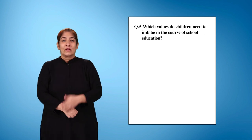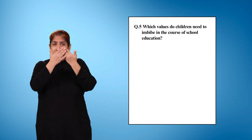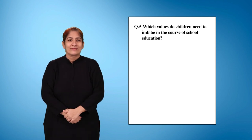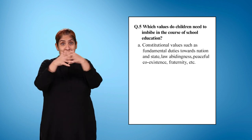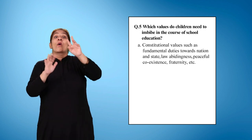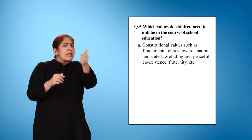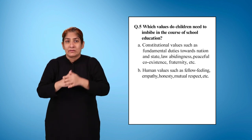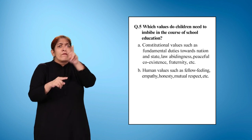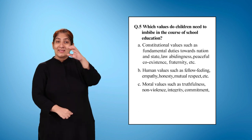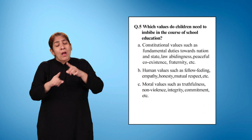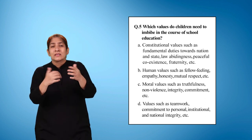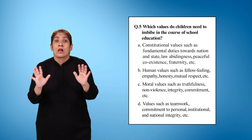Question 5: Which values do children need to imbibe in the course of school education? Select one or more options. Option A: Constitutional values such as fundamental duties towards nation and state — law-abidingness, peaceful coexistence, fraternity etc. Option B: Human values such as fellow feeling, empathy, honesty, mutual respect etc. Option C: Moral values such as truthfulness, non-violence, integrity, commitment etc. Option D: Values such as teamwork, commitment to personal, institutional and national integrity etc.